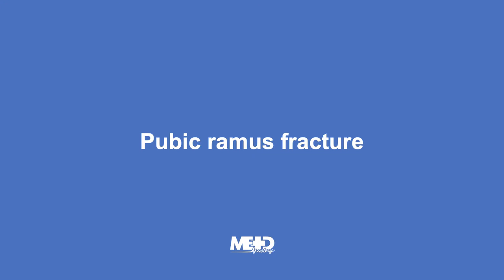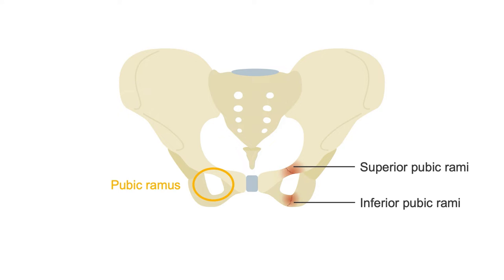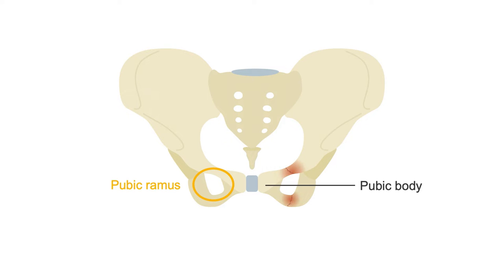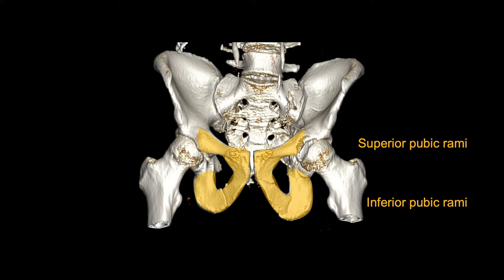Let's look at pubic ramus fractures. A common fracture pattern is a fracture of the pubic ramus involving both small bones of the pubis — the superior and inferior pubic rami. The pubic rami connect in the midline to form the pubic body. Here is a 3D image of the pelvis in this patient who has fractured both the left and right sides of the pelvis. Remember that this ring will fracture in two places, and look for injuries in both the superior and inferior pubic rami in the axial images.